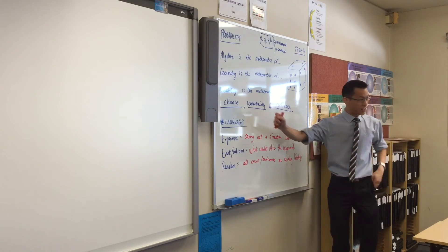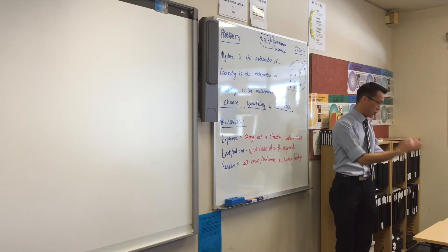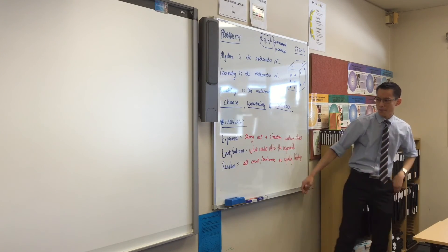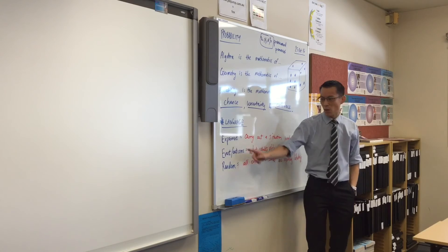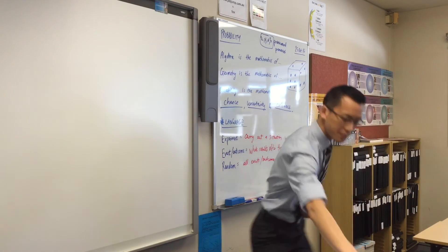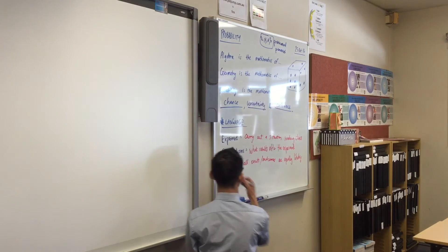So, we know what an experiment is. That's what happens when you do something, basically. An event or outcome is what happens at the end of the experiment. Random experiments are where all of those events or outcomes are the same chance. One last phrase I want to give you, and it's the one we're going to focus on in this lesson.